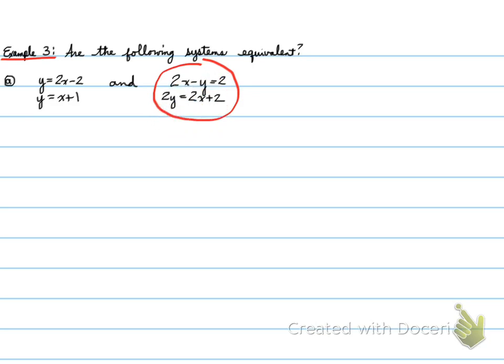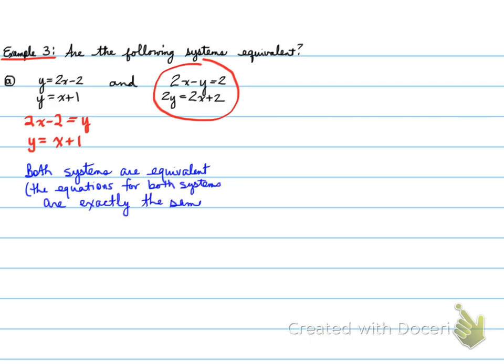So what we should do is make this into y equals for both equations. You get y is equal to 2x minus 2, and the second one is going to be y equals x plus 1. So the first one, we make y by itself, move y over, you get 2x minus 2. And for the second one, you divide everything by 2. So this gets divided by 2, this whole thing gets divided by 2, and you get y is equal to x plus 1. What I see is that this first system and the second system are exactly the same. So both systems are equivalent because the equations for both systems are exactly the same.